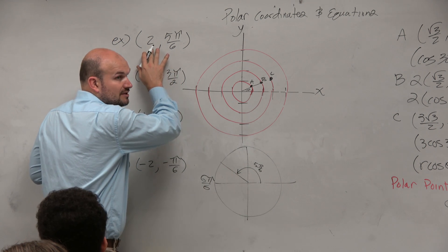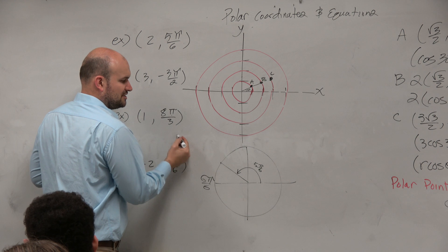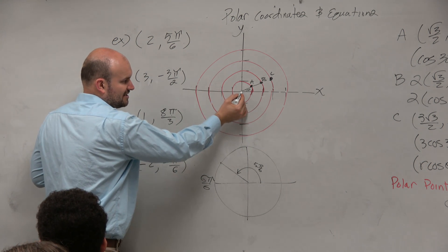But now we have a radius of 2, so it's not at the unit circle, but it's actually at a second ring. So I'm just going to sketch this.